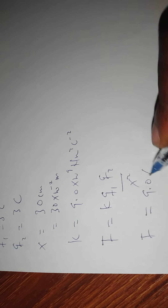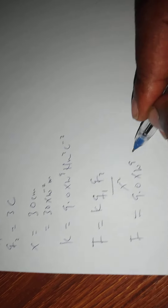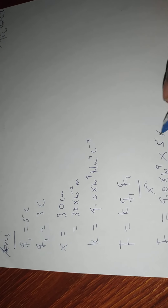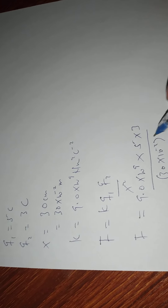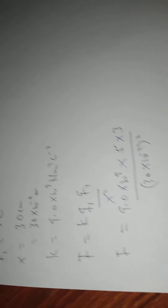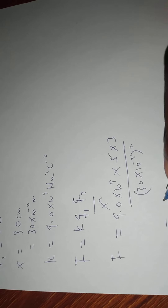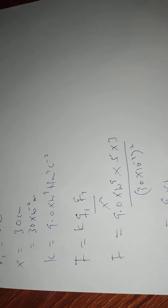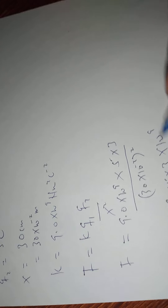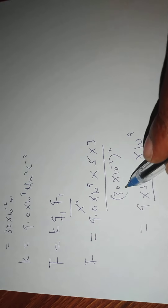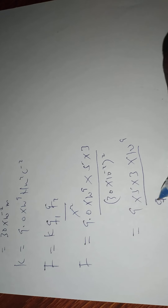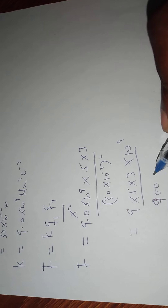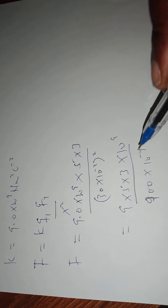You are going to get 9.0 times 10 to the power 9, multiplied by 5, multiplied by 3, all over 30 times 10 to the power negative 2, and we are squaring this. So this will give you 9 times 5 times 3 times 10 to the power 9, all over — here I have 3, so this will give me 9, and then 2 zeros, times 10 to the power negative 4.